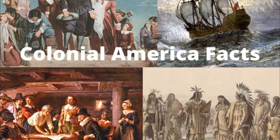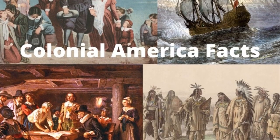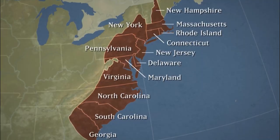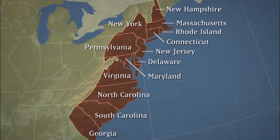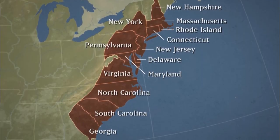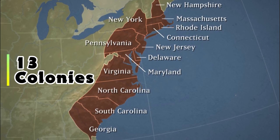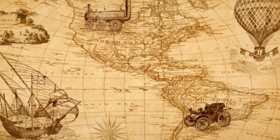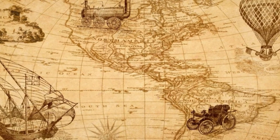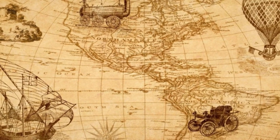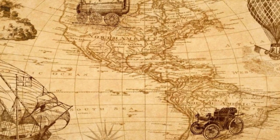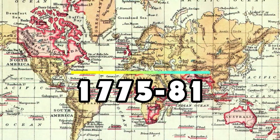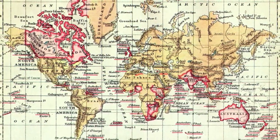During the 17th and 18th centuries, the British established a group of colonies along the eastern coast of what is now the United States. These colonies were referred to as the Thirteen Colonies or Colonial America. As time passed, the colonies expanded and extended along the Atlantic coast, and by the time the American Revolution occurred in 1775–81, the number of colonies had reached 13.